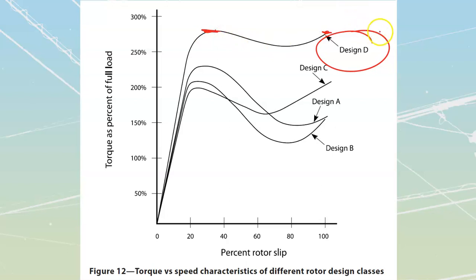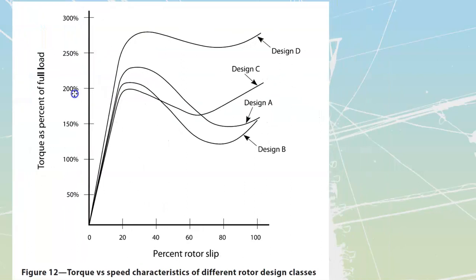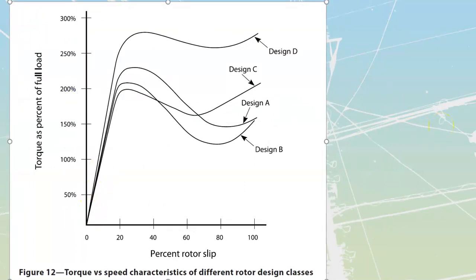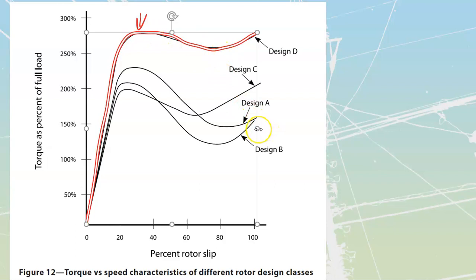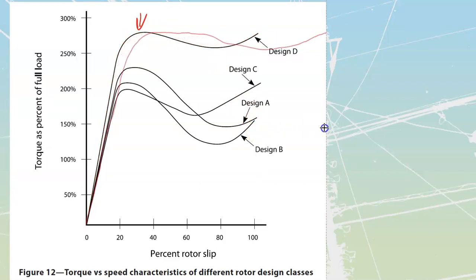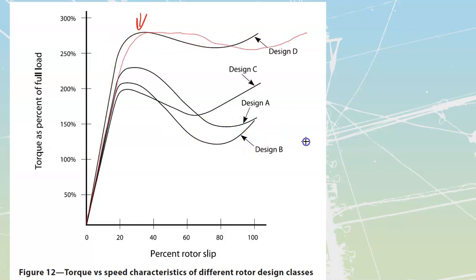Design class D was characterized by having a high resistance type of rotor. What we're going to do with the wound rotor motor is take a design class D motor and do something really special with it. We're going to have a high resistance rotor giving us this overall torque curve, and by selectively applying components we'll be able to adjust where the peak is. I'm going to stretch this waveform out and move where we get our maximum torque.